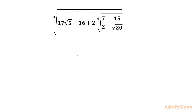Welcome back to Infigyan, my dear friends. In this video we have another very interesting and challenging question from Radicals. Here we have to evaluate the cube root of 17√5 minus 16, plus 2 times the 4th root of 7 over 2 minus 15 over √20. So let's get started.